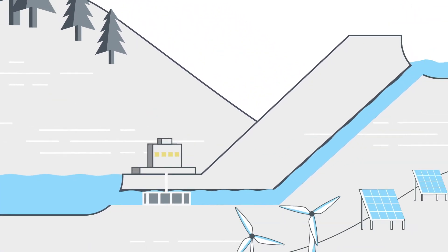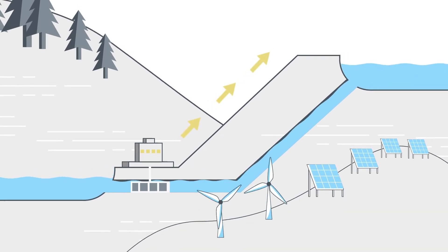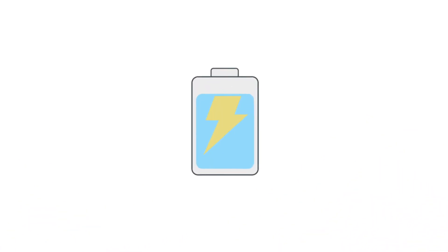When electricity demand is low, the project uses excess renewable energy to pump the water from the lower to the upper reservoir, recharging the system like a giant battery.